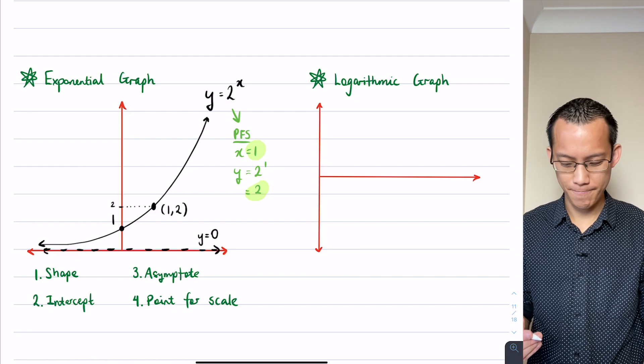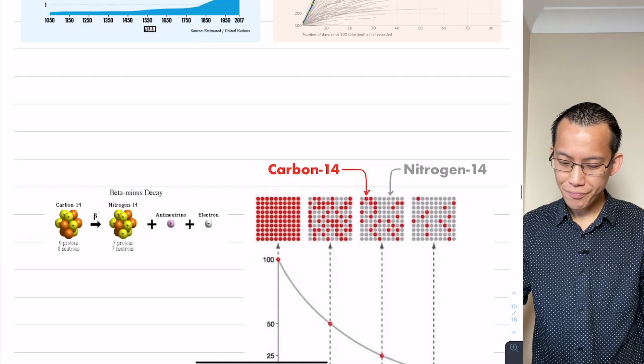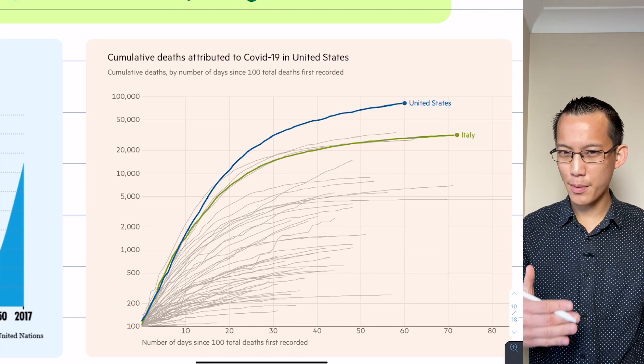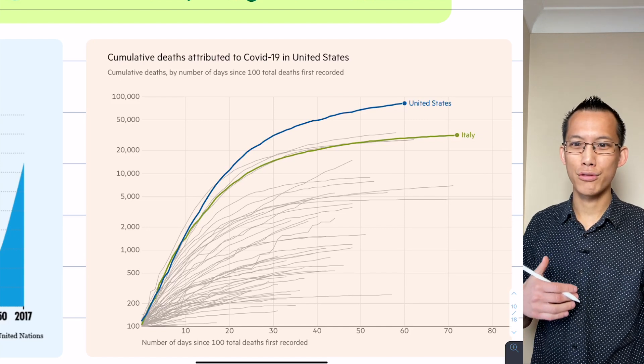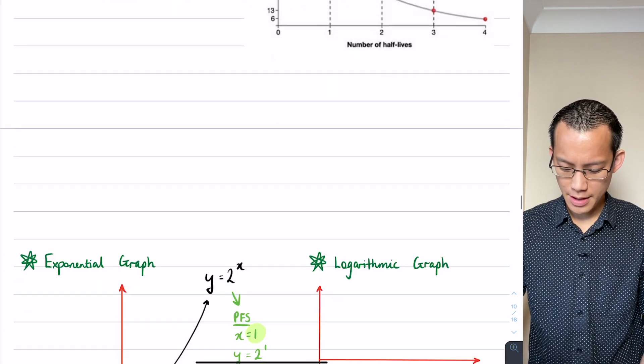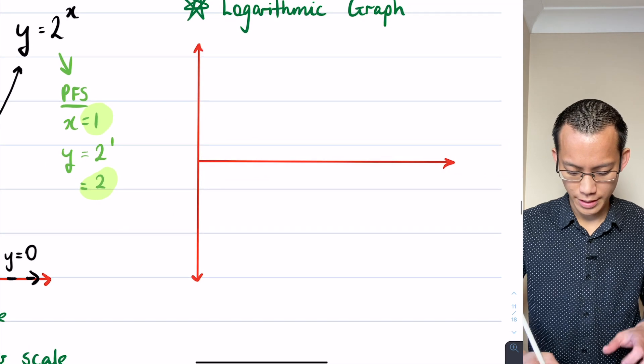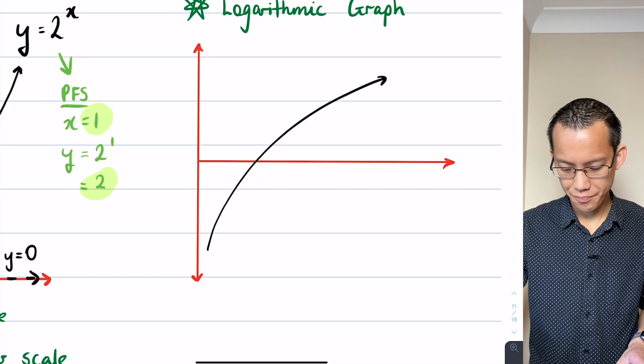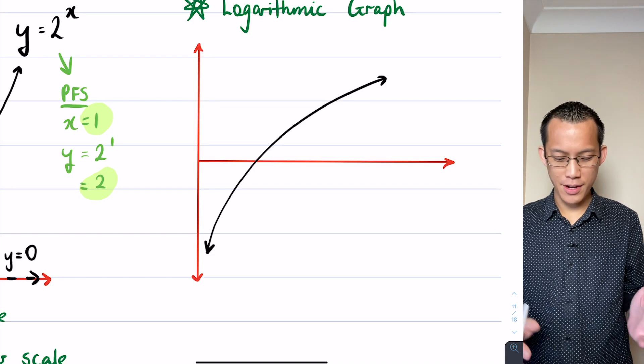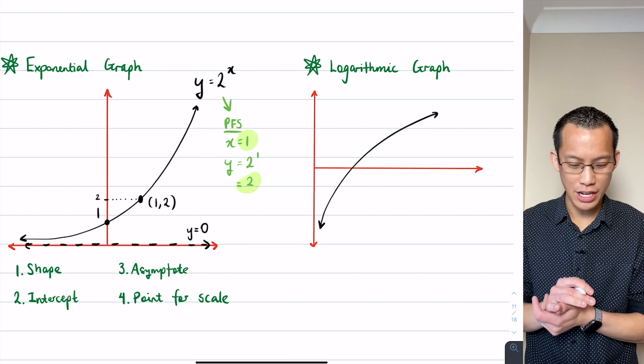We're going to draw this logarithmic graph. Remember this is the overall shape we're kind of going at here - instead of getting steeper and steeper forever, we're going to get shallower and shallower forever. Let's go ahead and draw it in one smooth curve. There's my curve - you can see it's going to very closely match the same kind of shape.